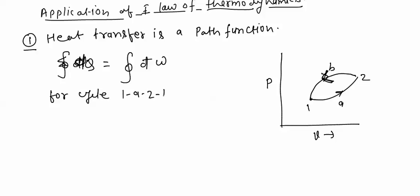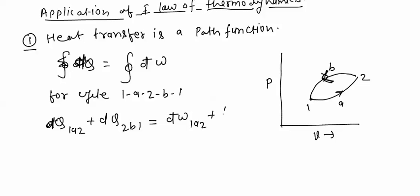For the cycle 1A2B1, the total heat transfer will be: δQ(1A2) + δQ(2B1) = δW(1A2) + δW(2B1). I am writing the total algebraic summation of heat equal to the work transfer — that is equation 1. Now I will change the returning path of the cycle.